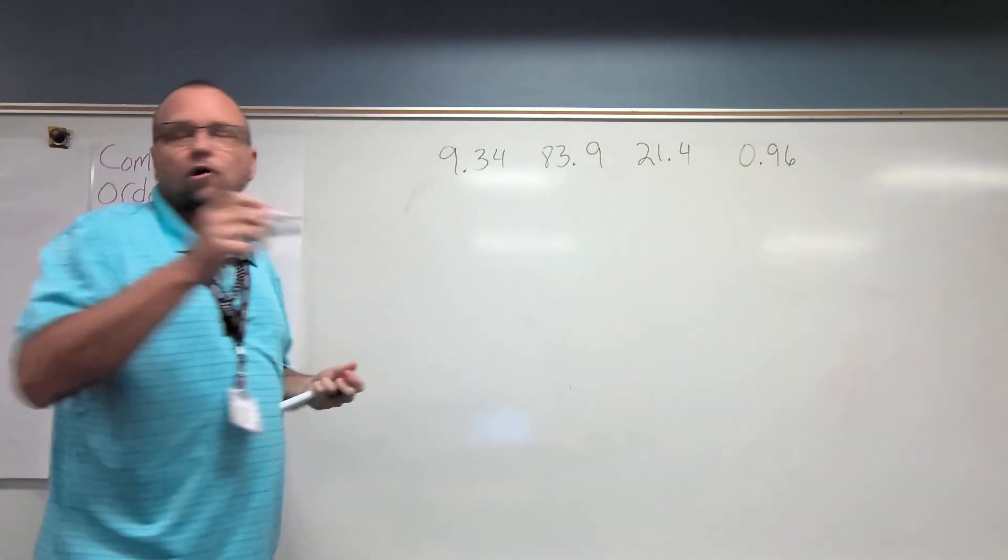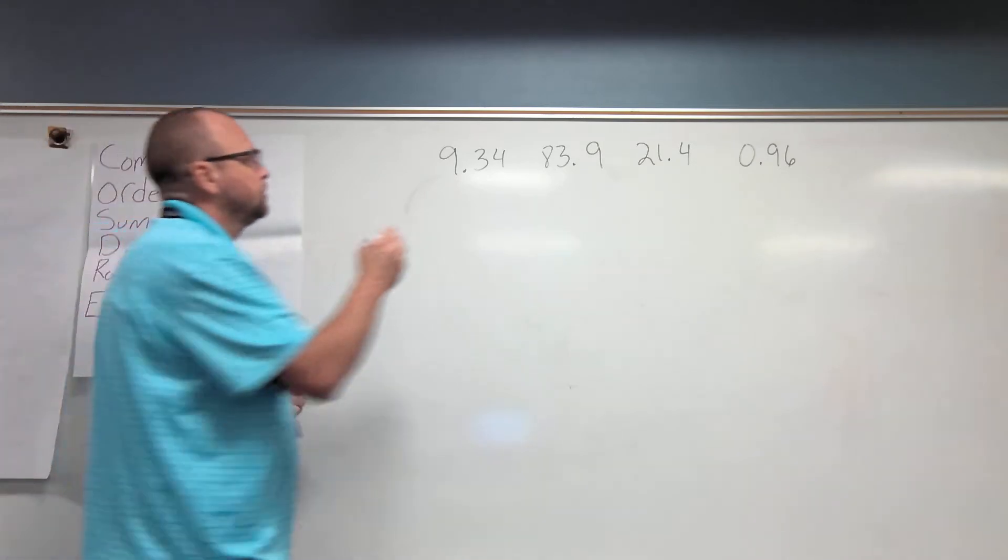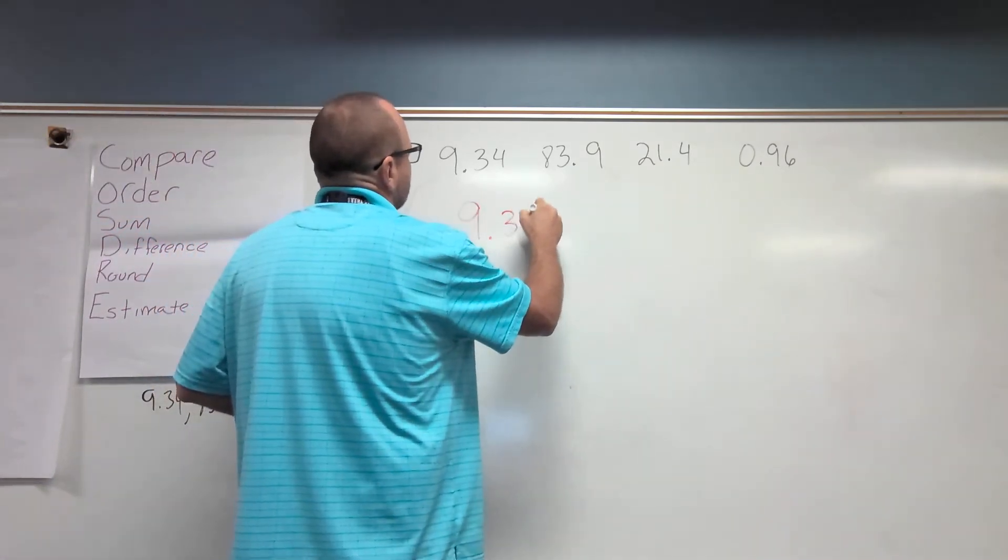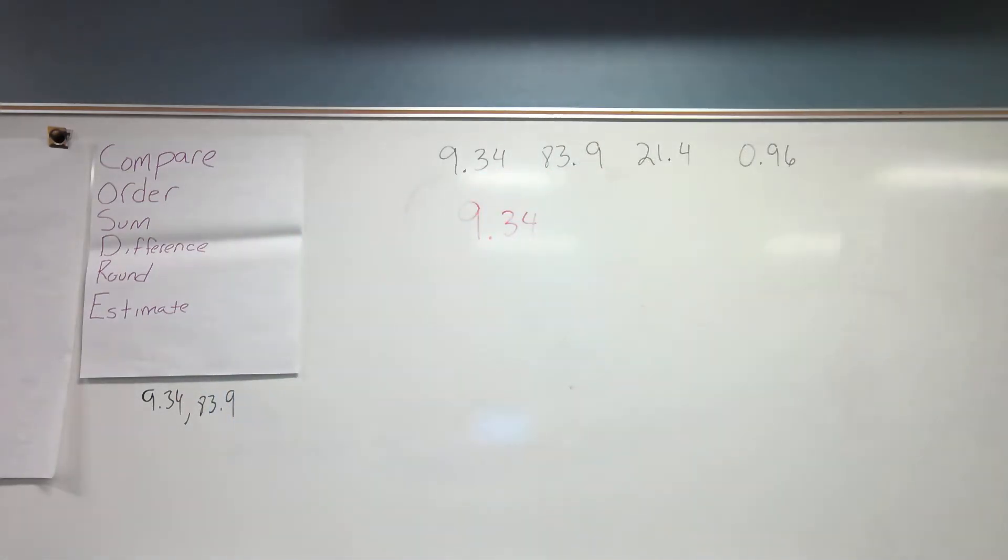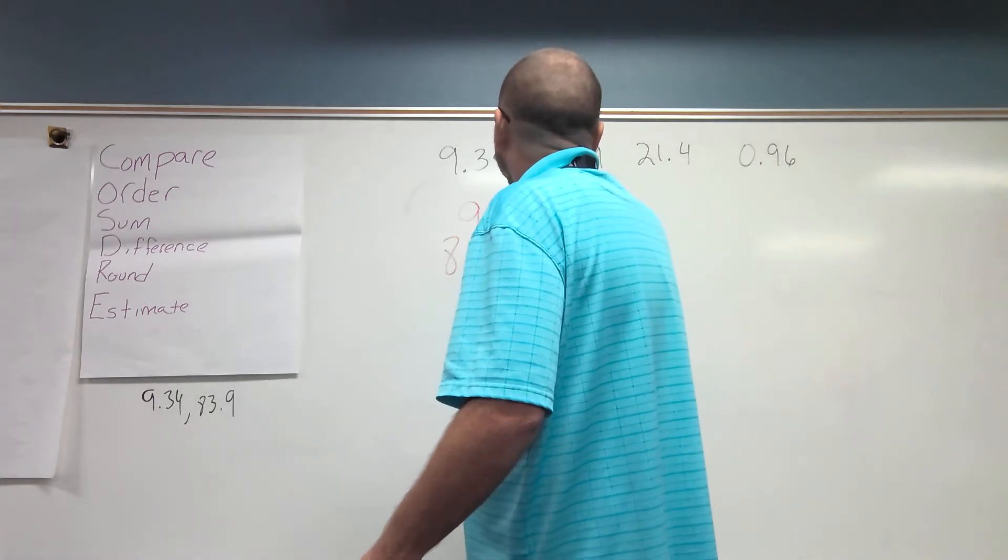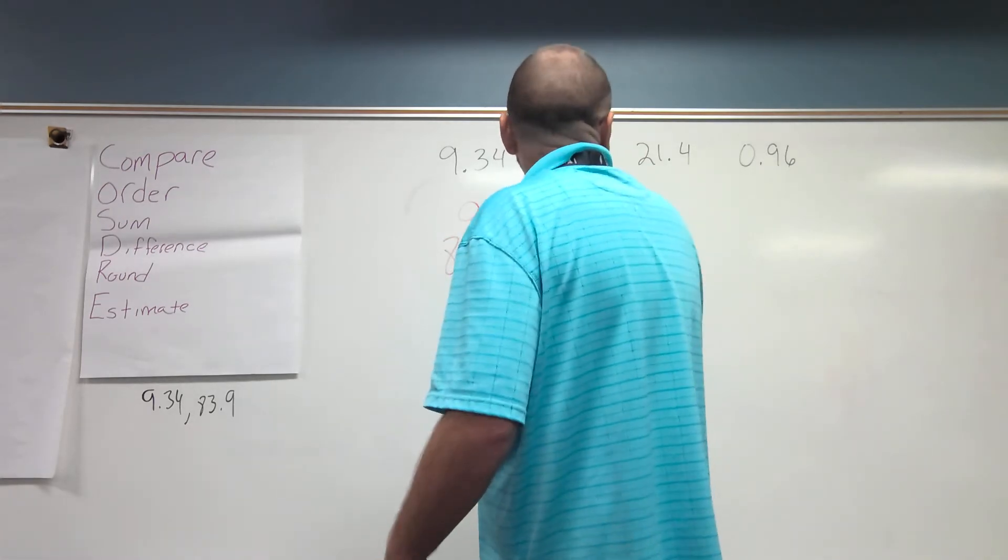So I'm going to rewrite this, and I'm going to line up each place value. My ones over my ones, my tenths over my tenths, my hundredths over my hundredths, and that makes it easy peasy, raw chicken squeezy. And by lining up the decimal points, it makes it much easier.